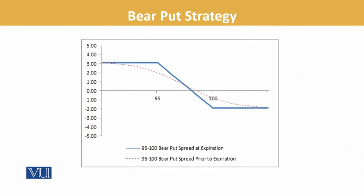अगर आप इसको graphically देखें तो यह हमें बताता है के how it goes. We started with roughly 3, और graphical representation हमें show कर रही है که share की price गिरेगी and we will gain out of it — यعنی जिस तरह stock हमारी direction में move करे تو we can gain out of it। अगर वो move नहीं करता تو we will be losing on the premium which we have paid. So this is the strategy — how it works, how it relates in the real world. थोड़े से पैसों से भी you can trade and make good money in the option market.